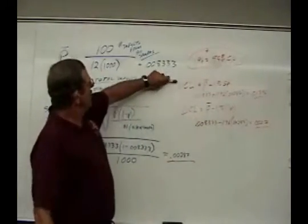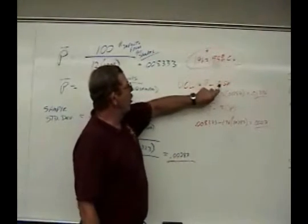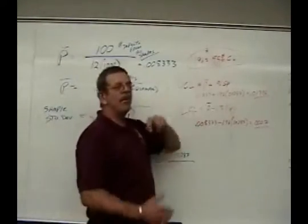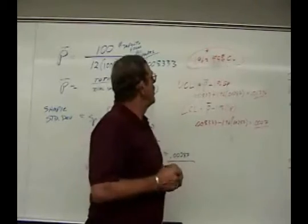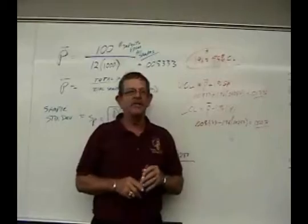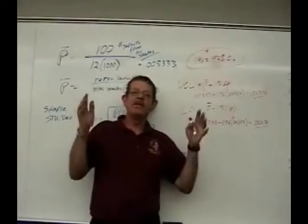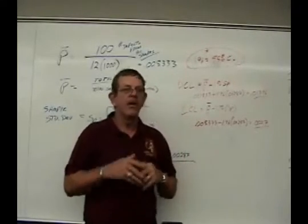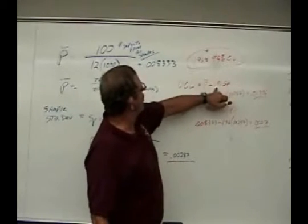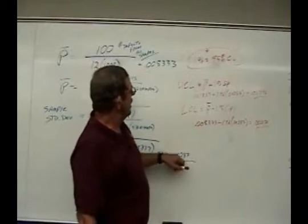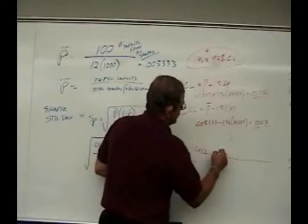Now we figure our control limits. The upper control limit formula is p-bar plus 1.96 times the standard deviation. Why 1.96? That's the number used for a 95% confidence level. If you use 90%, this number goes down; at 99% it goes up. Typically in statistics we use 95% — meaning you're 95% sure the numbers are accurate, allowing a 5% margin. So p-bar (0.008333) plus 1.96 times 0.00287 gives us an upper control limit of 0.01396.